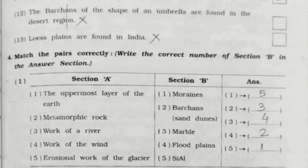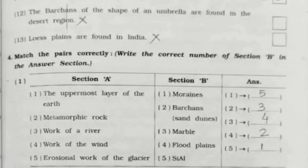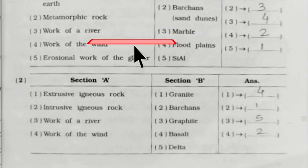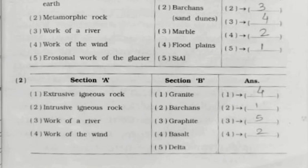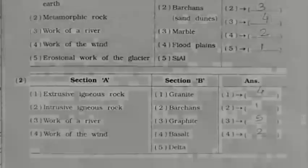Thirteenth: Loess plains are found in India — False. Now Question 4 — Match the Following. Section 1: The uppermost layer of the earth matches SIAL. Metamorphic rock matches marble. Work of a river matches flood plains. Work of the wind matches barchans. Erosional work of the glacier matches moraines. Section 2: Extrusive igneous rock matches basalt. Intrusive igneous rock matches granite. Work of a river matches delta. Work of the wind matches barchans.